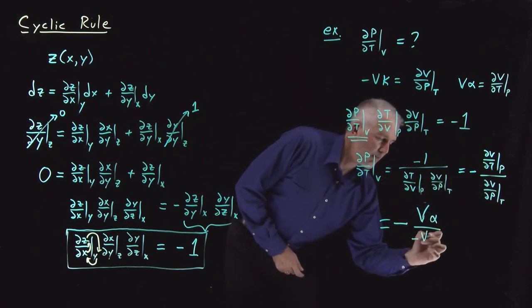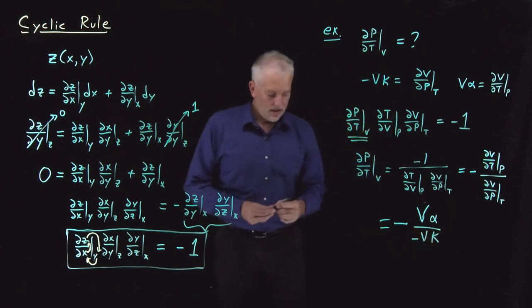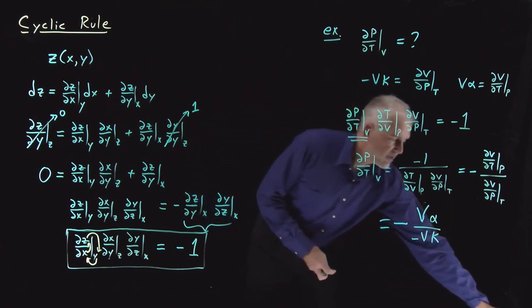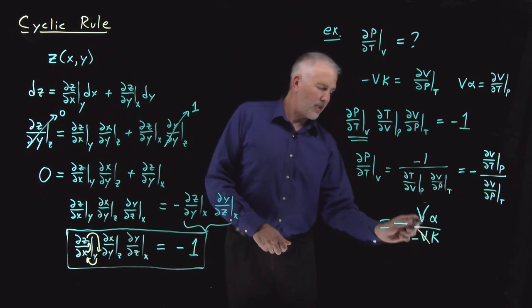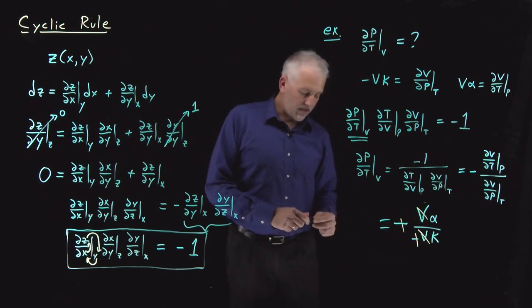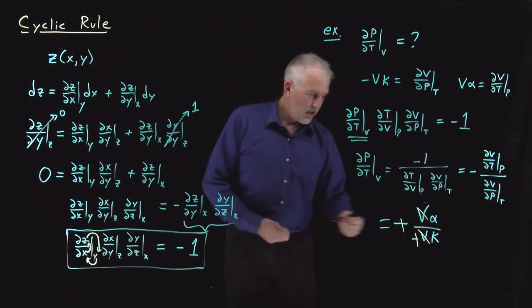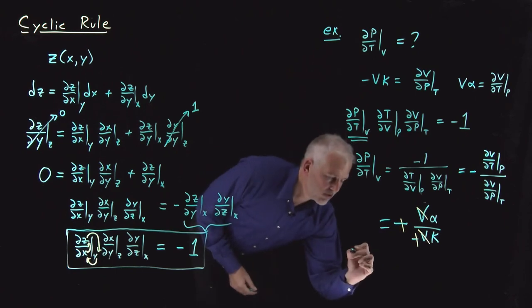Denominator ∂V/∂T at constant T, that's negative V κ. There we go. So now the same cancellation happens. The volumes cancel, the negative signs cancel, but now I have an α over a κ. So what we've learned